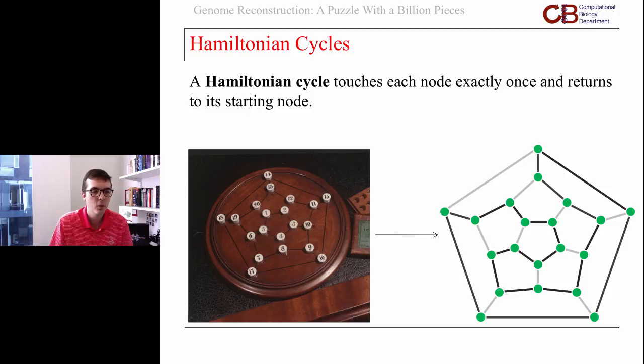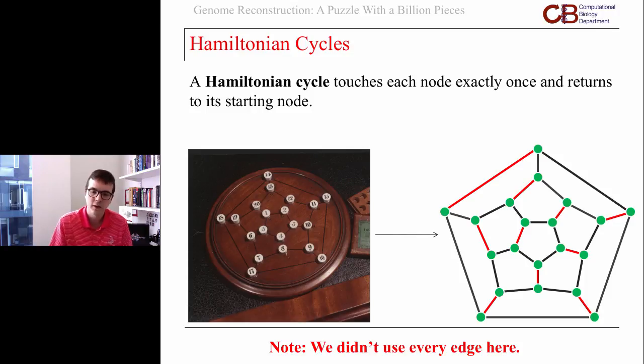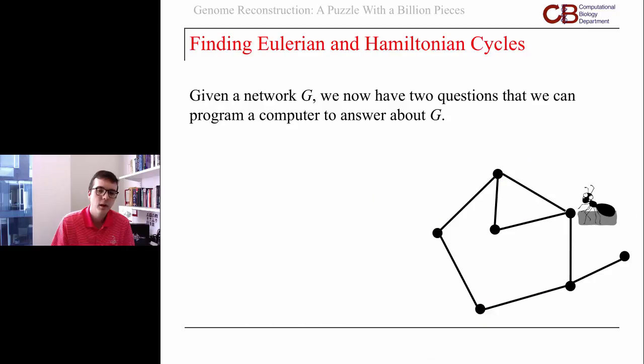The key point is we didn't use every edge. There's a difference between Hamiltonian cycles and Eulerian cycles: Hamiltonian cycles use every single node exactly once and return home. They seem like very similar problems. We can move towards a completely general problem. We might have many different applications of Eulerian or Hamiltonian cycles, but they're generic network problems at heart. We could program a computer to answer questions about them.